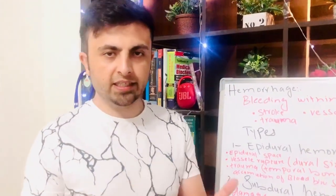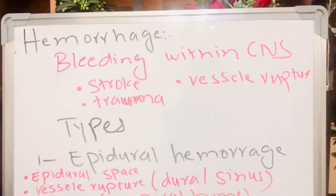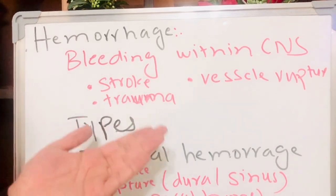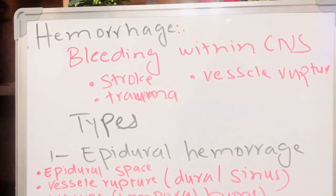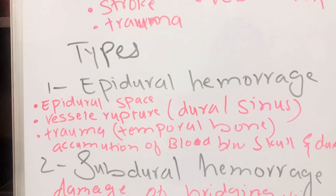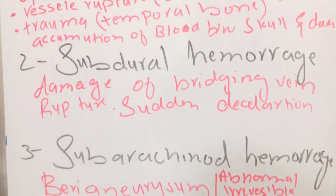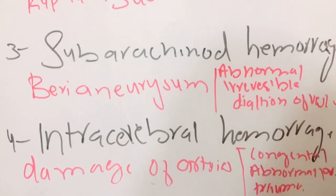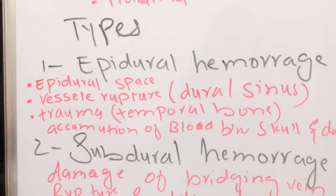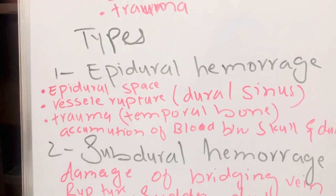Now we will discuss hemorrhages. A hemorrhage is bleeding or blood loss. In the context of the central nervous system, hemorrhage can be caused by stroke, vessel rupture, or traumatic injury. We have four kinds of hemorrhages in the central nervous system: epidural hemorrhage, subdural hemorrhage, subarachnoid hemorrhage, and intracerebral hemorrhage. The name of each suggests where the hemorrhage occurs.